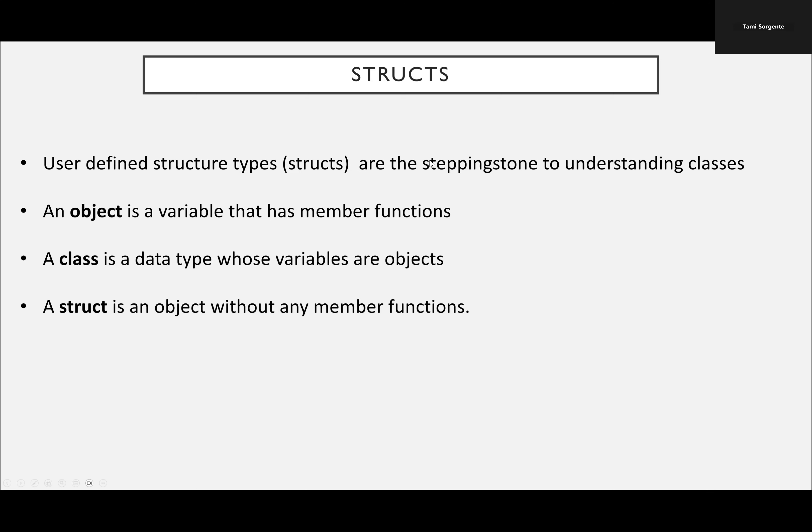Structs are instances, not objects — that terminology comes with classes. You can take strings, integers, character arrays, double arrays, and all kinds of mixed types of data and put them all together into one structure. Then you can access all of that data by using what's called the dot operator. A class takes that to the next step because it has member variables and member functions to manipulate that data.